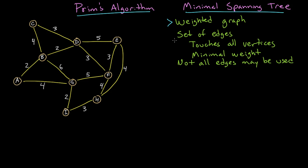The minimal spanning tree is a set of edges. All these edges need to touch all the vertices of the graph, such that the total weight of all those edges are as small as possible, so they are minimal. Not all the edges may be used in the minimal spanning tree, and in fact there might be more than one minimal spanning tree for a given graph.